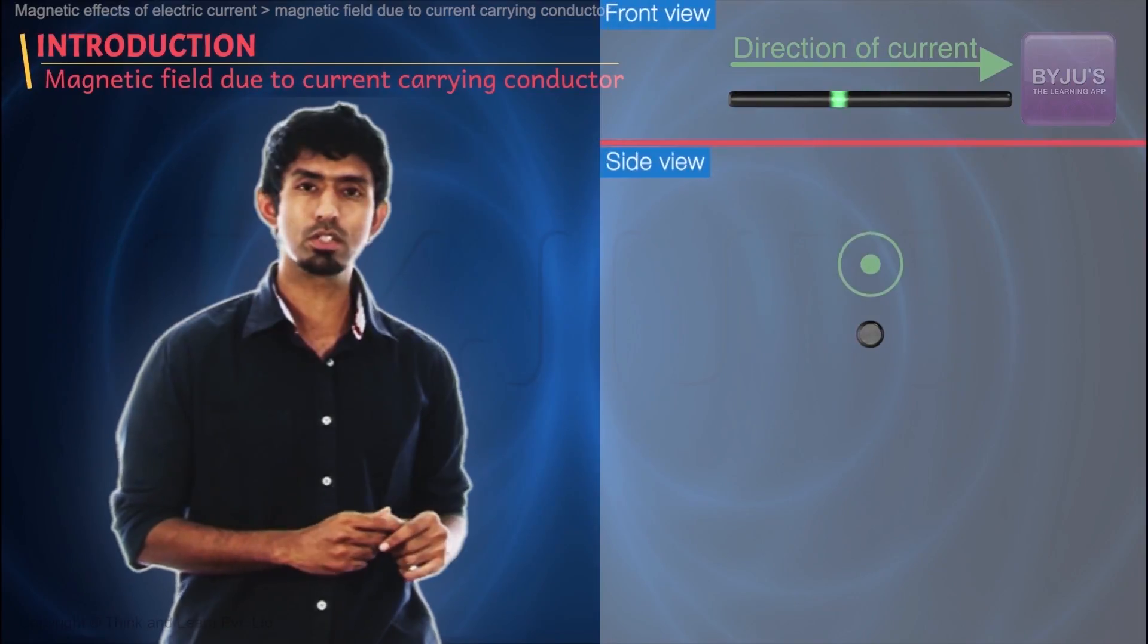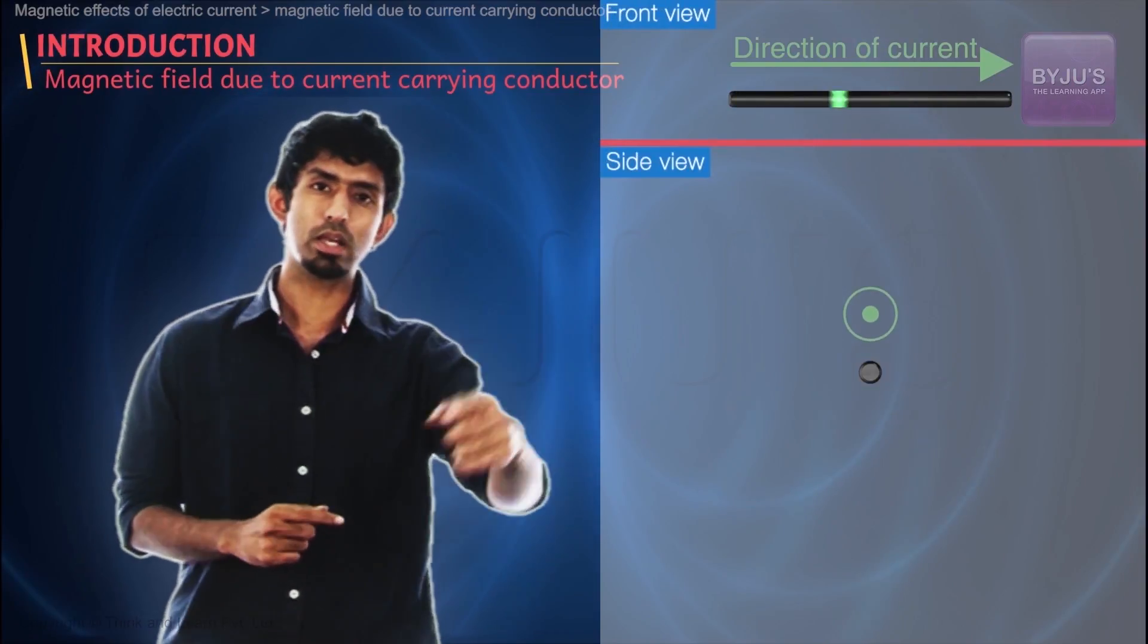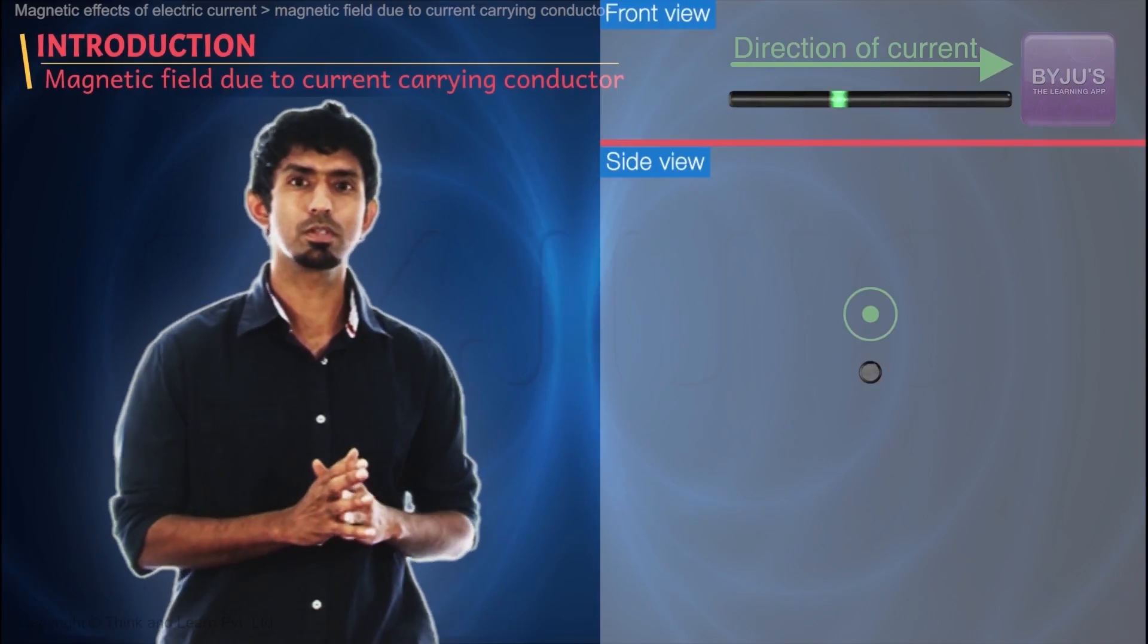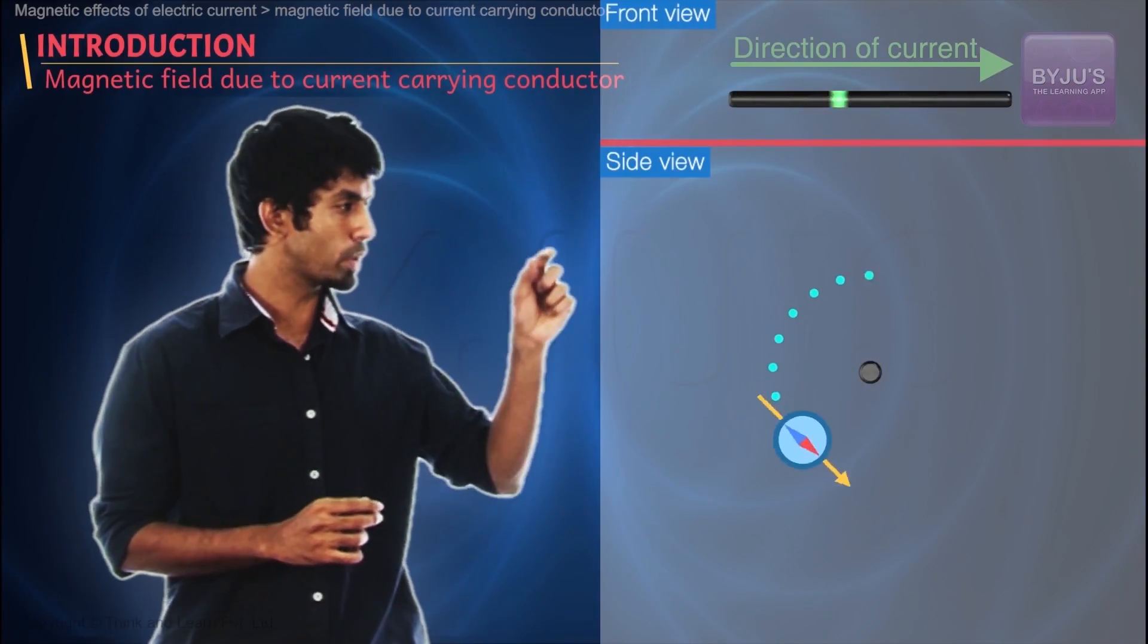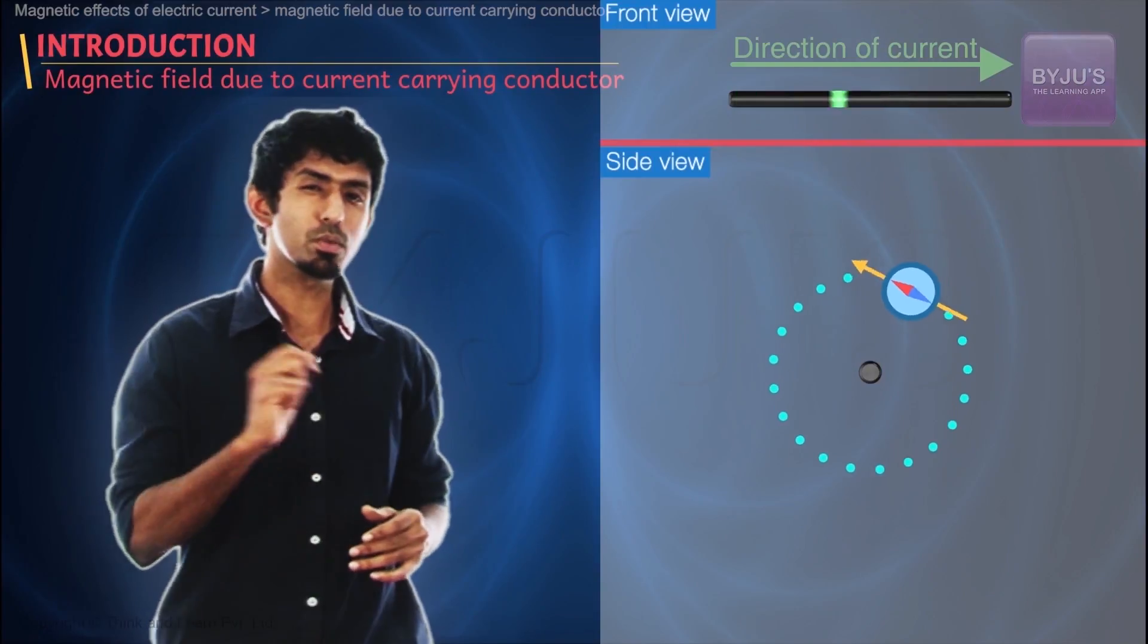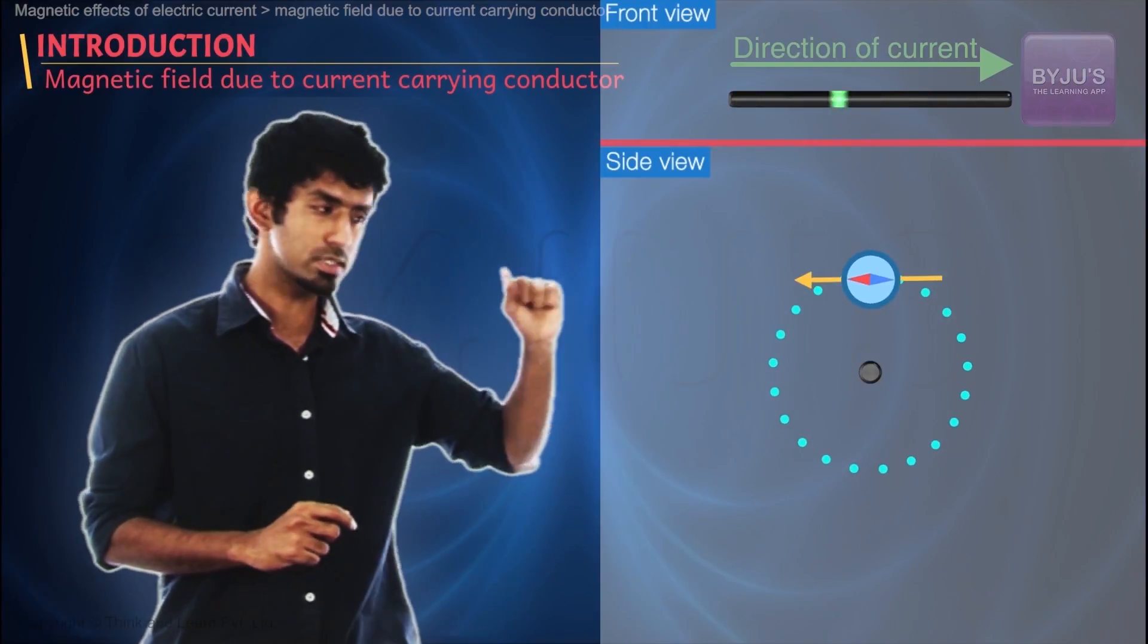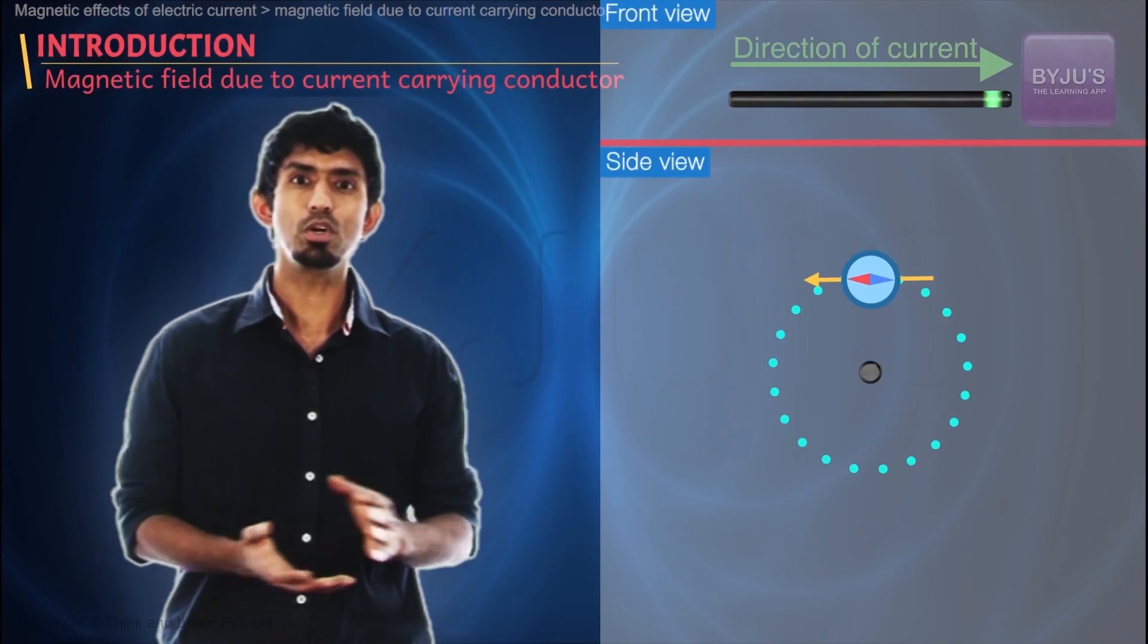If I were to turn this wire this way, such that the wire is coming right at you with the current flowing right at you, then if I were to take a compass and keep it in various points, he found something very fascinating that the compass points in a direction that's tangential to an imaginary circle.